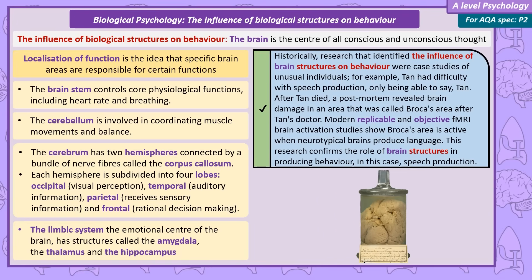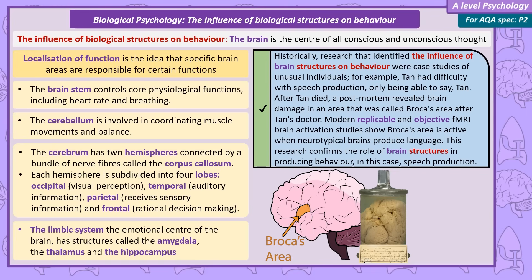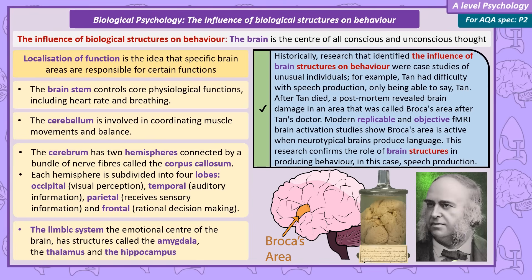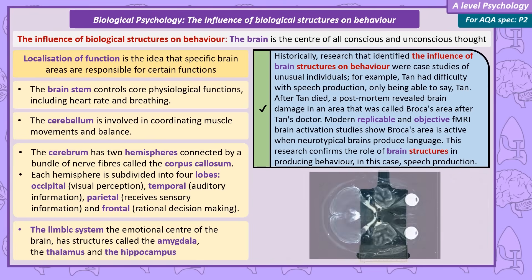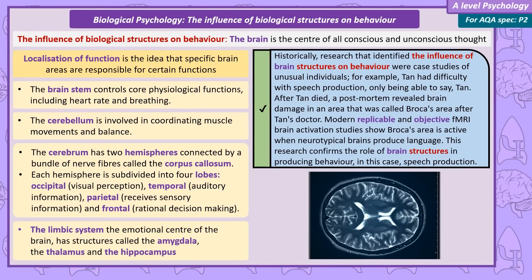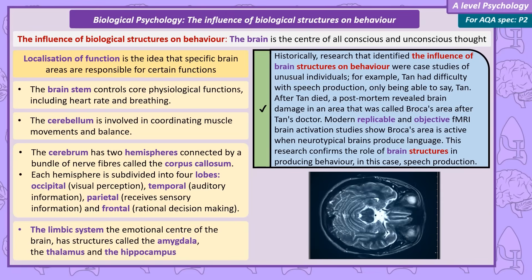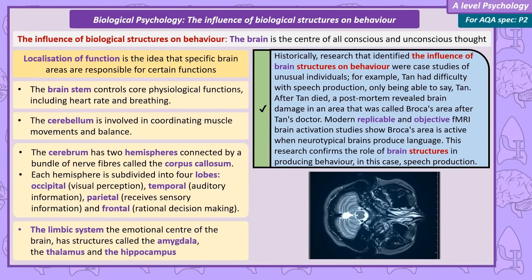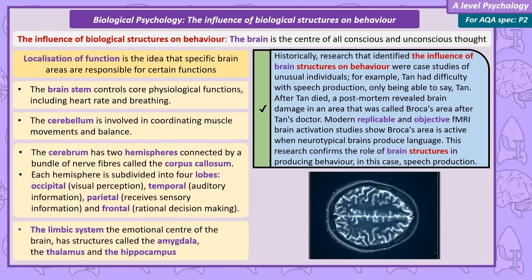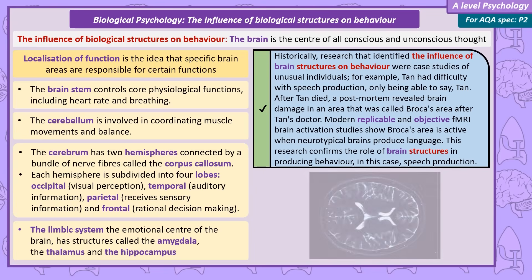If you've just watched my cognitive approach video, you likely remember TAN. TAN had difficulty with speech production, only being able to say 'TAN'. After TAN died, post-mortem research revealed brain damage in an area that was called Broca's area, after TAN's doctor. Many years later, brain activation studies confirmed Broca's area is active when neurotypical brains produce language. This research confirms brain structure's role in producing behaviour — in this case, speech production.